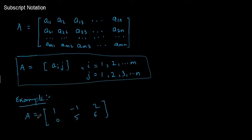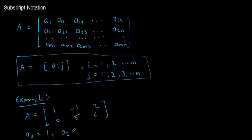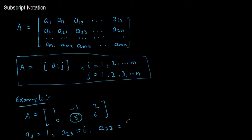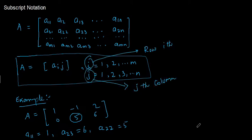For example, suppose A is a matrix with elements 1, -1, 2, 0, 5, 6. The element at first row, first column is 1. The element at second row, third column is 6. The element at second row, second column is 5. In this way we can find the position of any element using subscript notation Aij, indicating the ith row and jth column.